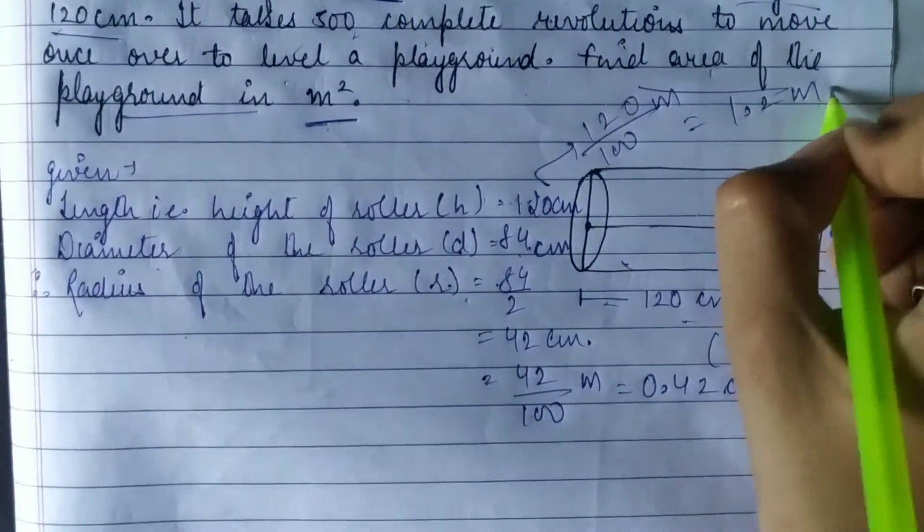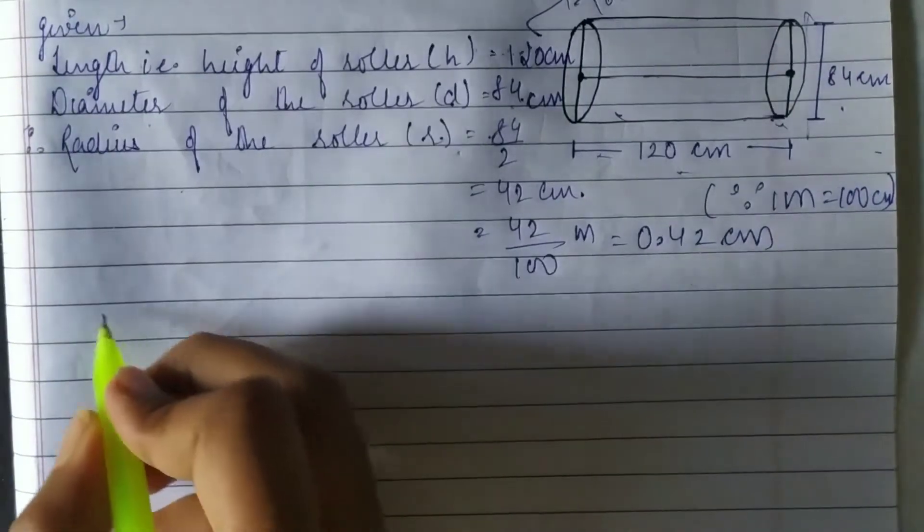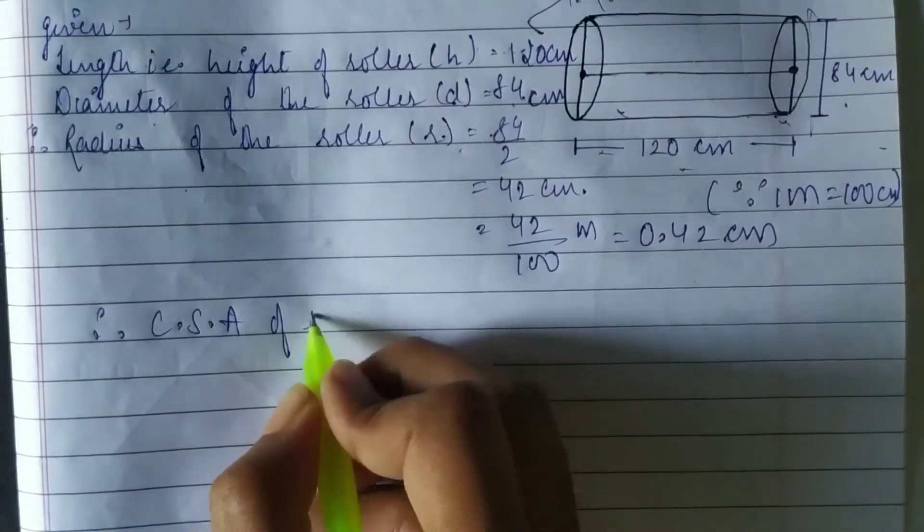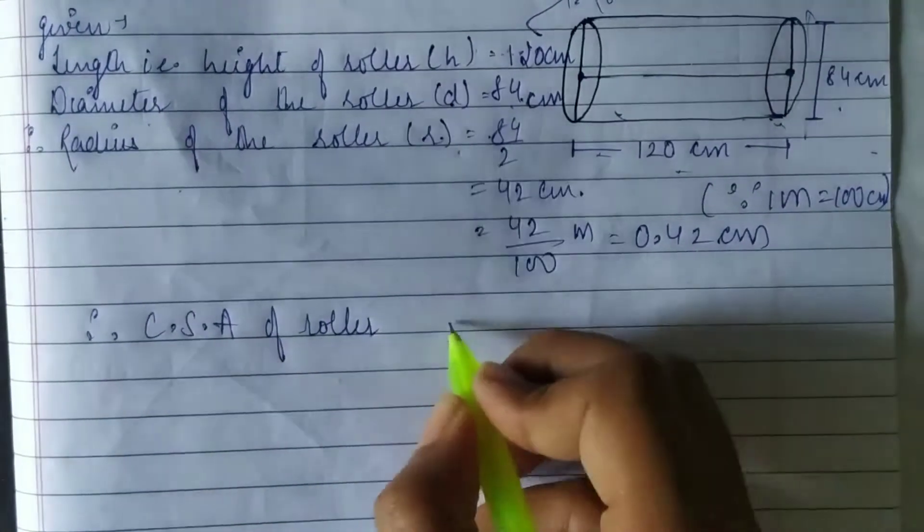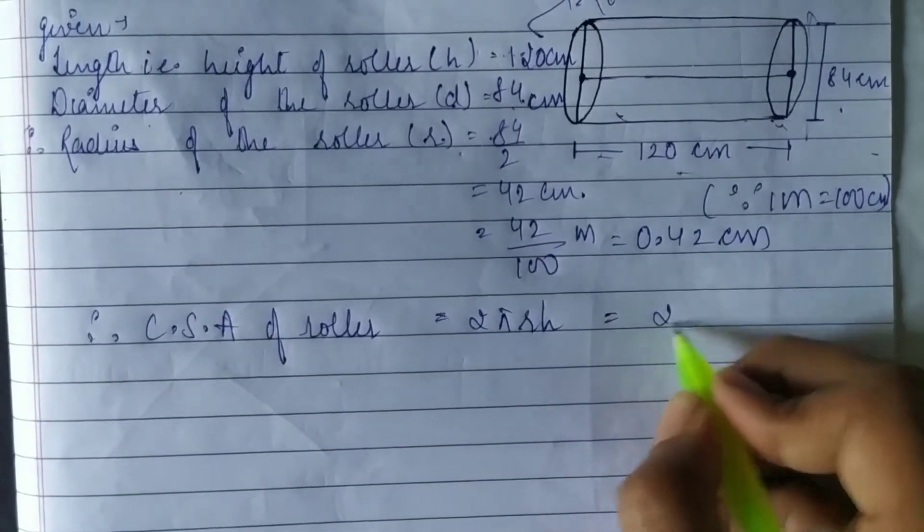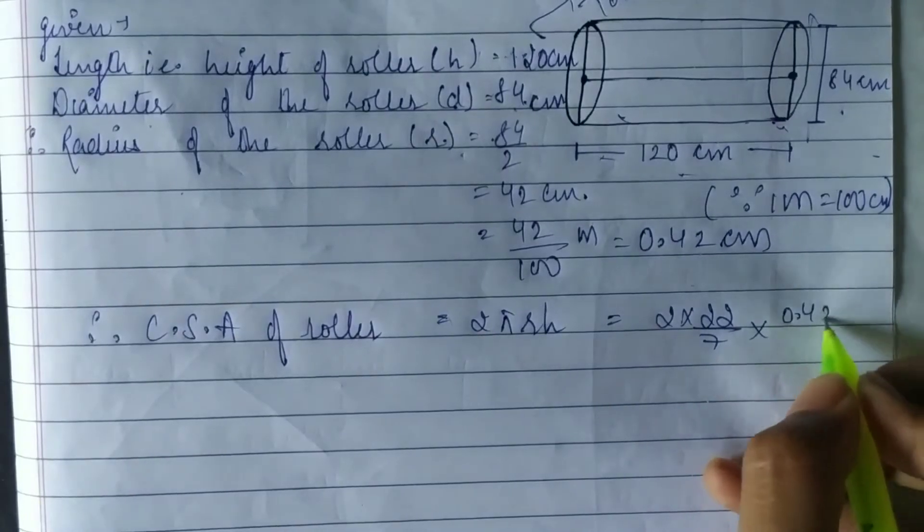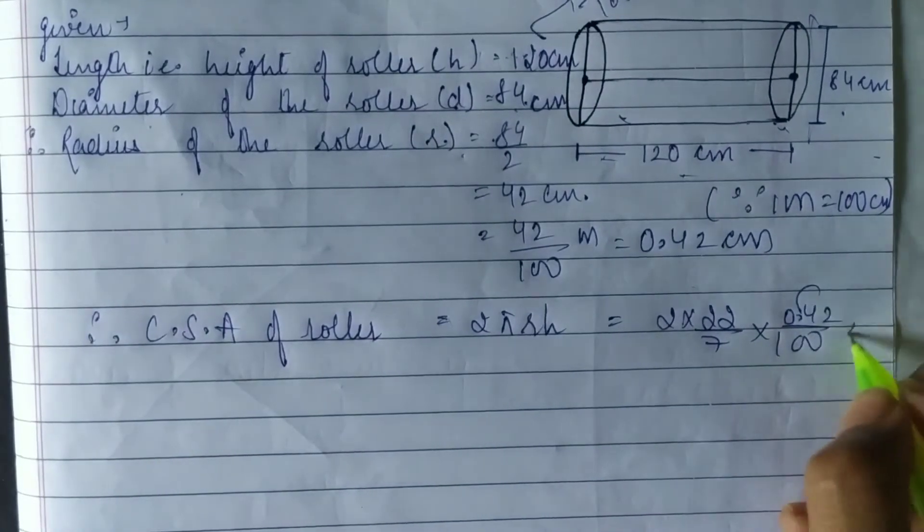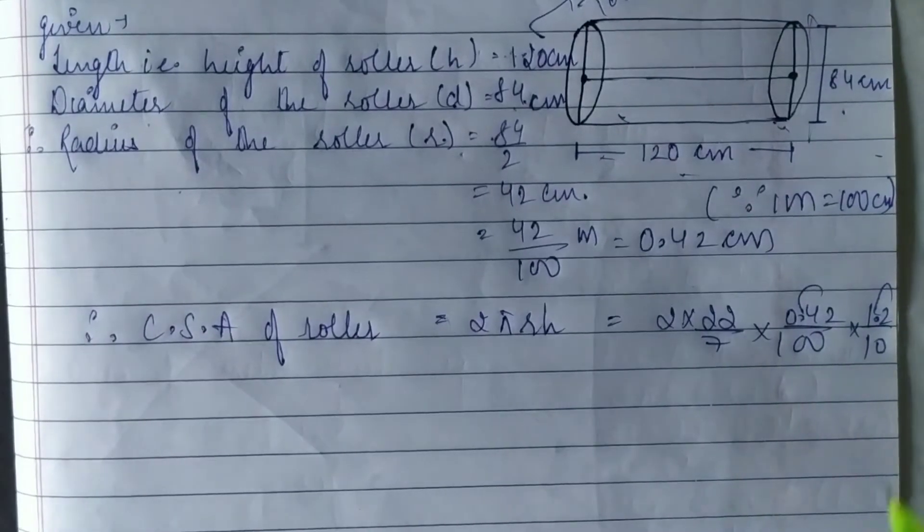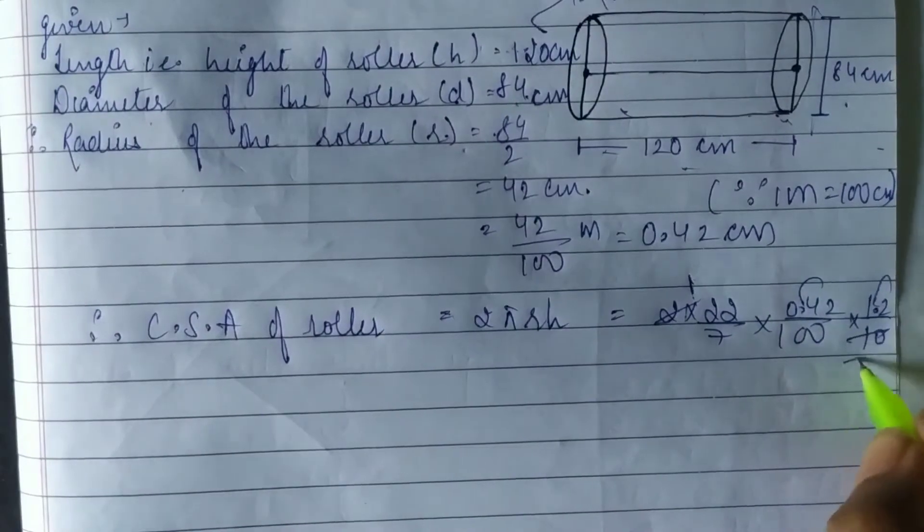Therefore, the curved surface area of the roller uses the formula 2πRH. We substitute the values: 2 times 22/7 times radius 0.42 times height 1.2. Now, 2 times 1 is 2, 2 times 5 is 10.